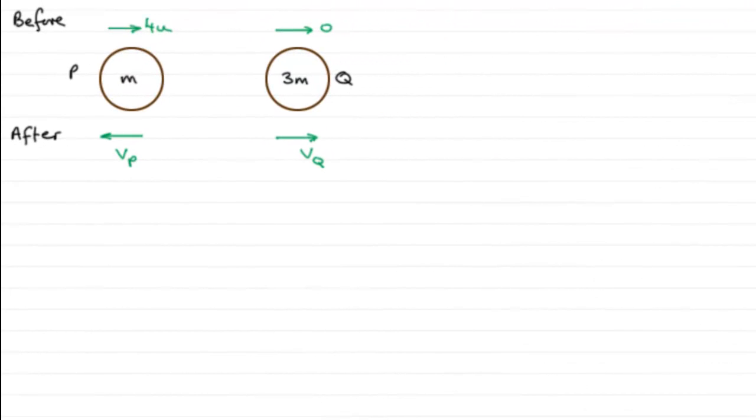Now, before we start, I'd encourage you to draw a diagram, something along these kind of lines where we've got our particle P and Q. P of mass M, Q of mass 3M. And we're told that before the collision, P is moving towards Q with a speed of 4U. And Q is at rest, so I've just marked that in as 0 speed there.